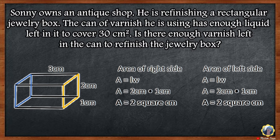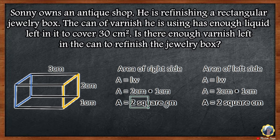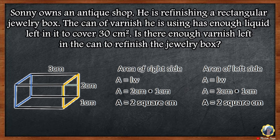Next is the area for the right and left side. The formula is length times width. 2 cm times 1 cm is equal to 2 square centimeters. Since right and left side are parallel, the area for the right side is 2 square centimeters and the left side is also 2 square centimeters.